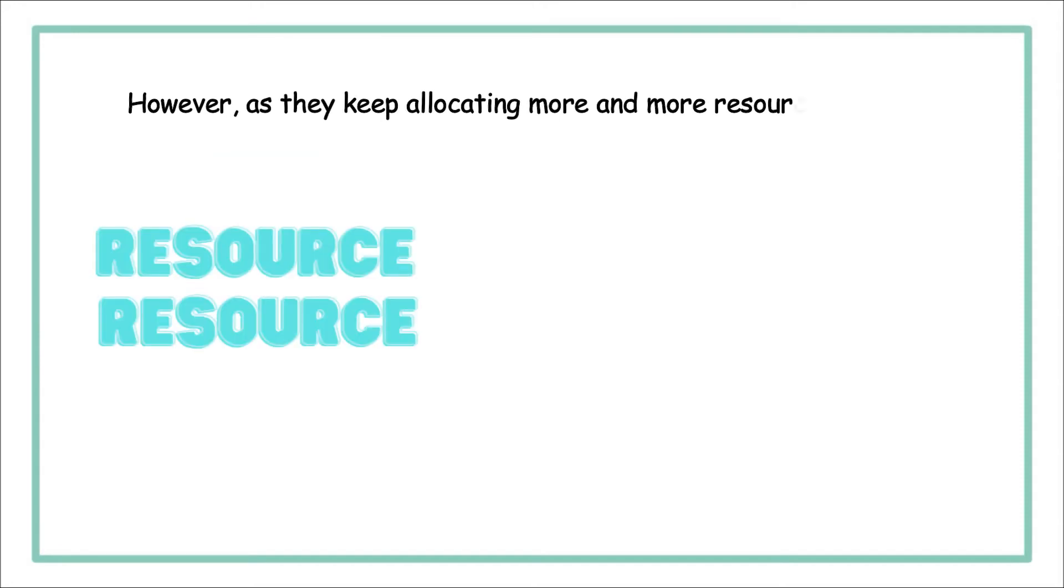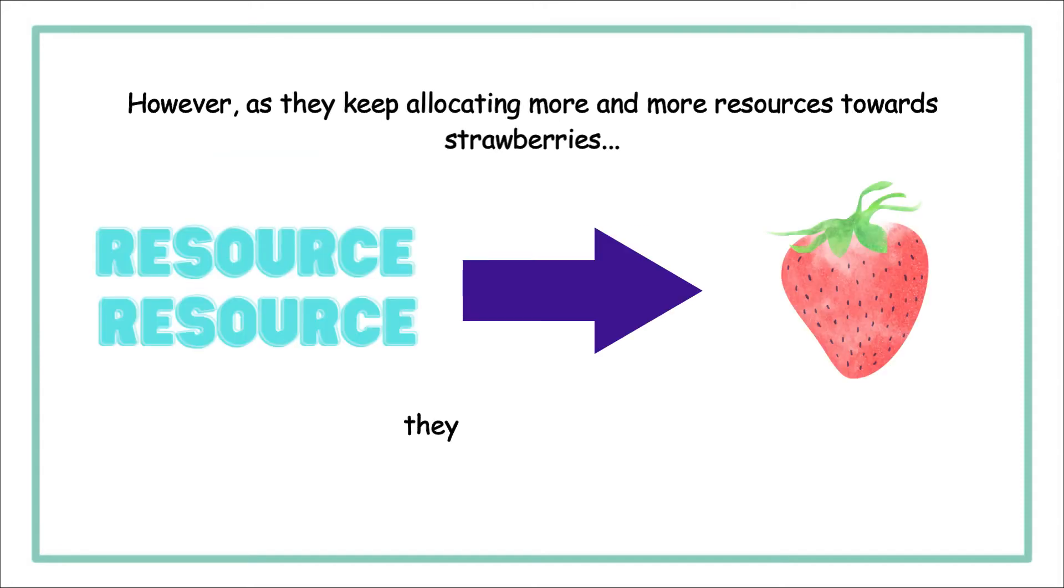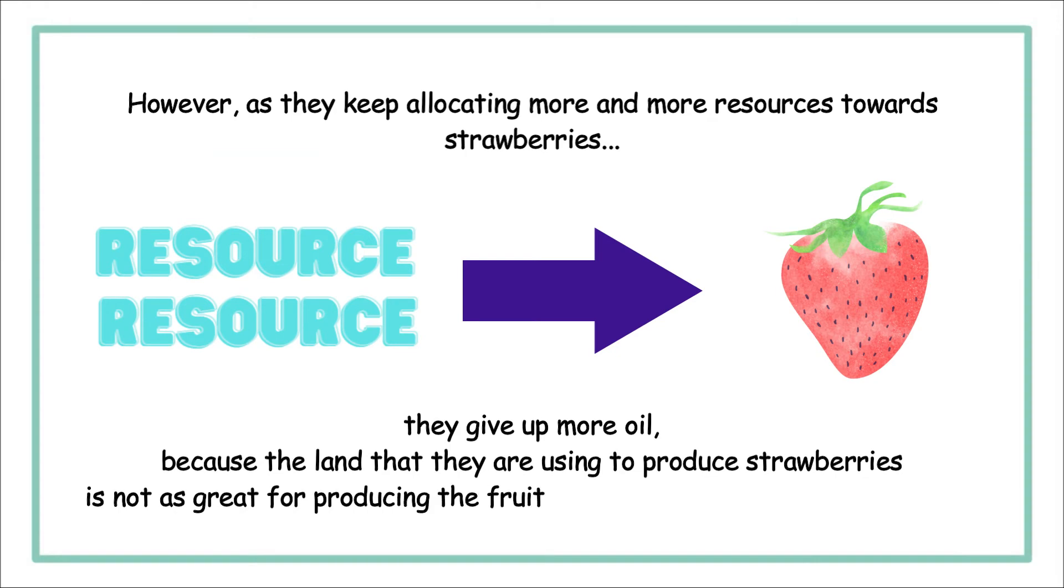However, as they keep allocating more and more resources towards strawberries, they give up more oil, because the land that they are using to produce strawberries is not as great for producing the fruit as when they only produced a little bit.